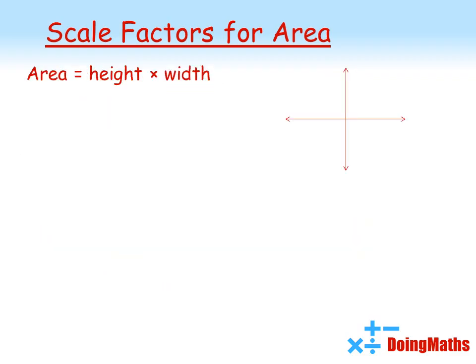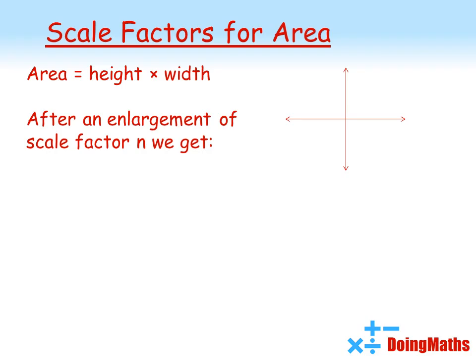Whenever we work out the area of a 2D shape, we're actually doing height times width. There are two dimensions to it. So after an enlargement of scale factor n, the new area of our larger shape would be n times the original height times by n times by the original width.